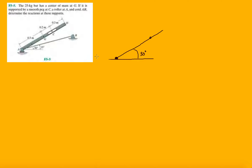So now let's look at the reaction forces. There's a roller at A, so we know the roller has only one reaction force — it's just normal to the surface that it's touching. So Ay. The next force we need: let's write down the normal force at C. It's a smooth peg, meaning there's no friction in this direction, so it's free to slide in that direction. There's not going to be any reaction in the parallel direction to the peg. So there's one normal to it, just like the roller.